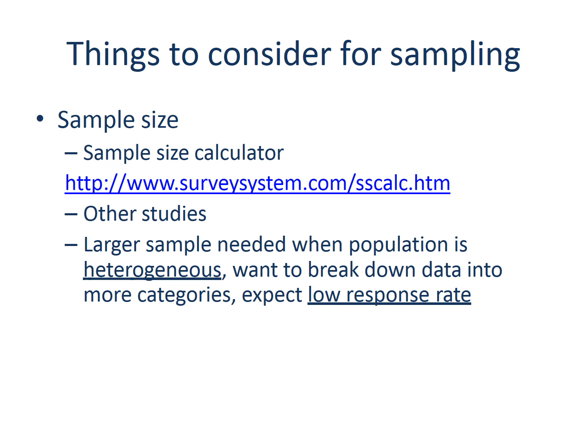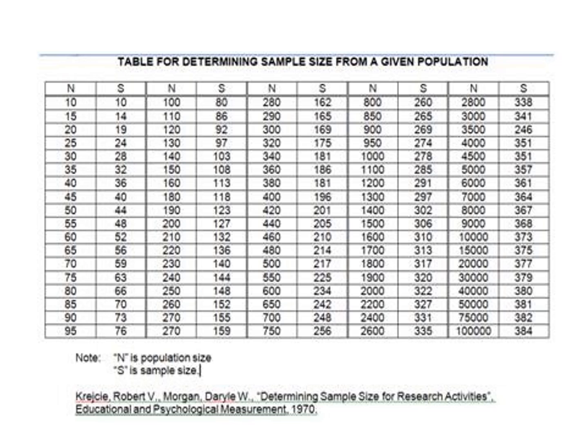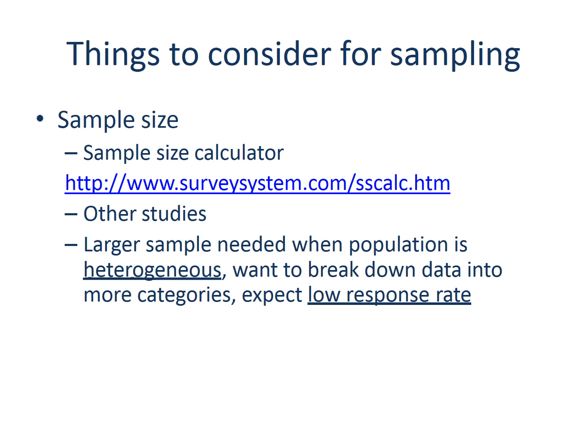Another important dimension for sampling is sample size. The sample size determines how generalizable the findings from the sample are. You can refer to a sample size calculator that is already available, or look at other studies to judge if you have enough sample size for a given population. You may want to go for a larger sample if your population differs across many dimensions, if you want to break data into more categories, or if you are concerned about a low response rate.